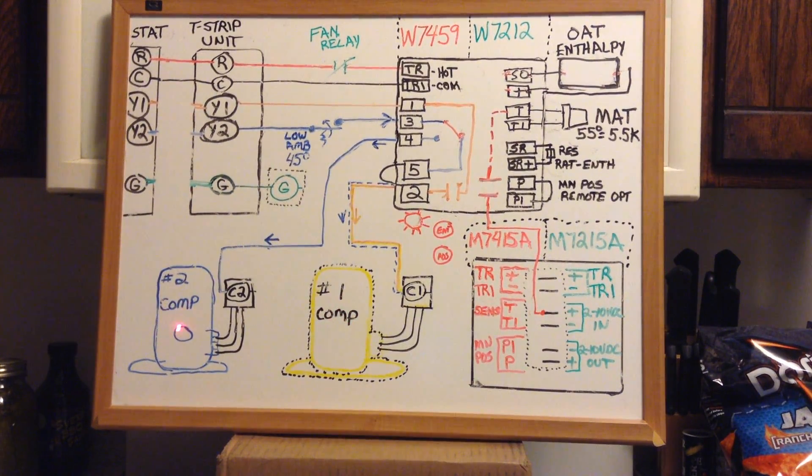And then we've got a number one compressor, number two compressor. This here is the contactor for the compressors. Outdoor air temperature enthalpy sensor, mixed air temperature sensor. The SR and SR plus terminals typically aren't used, but they always have a little jumper with a resistor in them. Those terminals are for the optional dual enthalpy if you wanted to use a return air enthalpy sensor along with the outdoor air, and then it looks at both of those enthalpies and determines which air is the better air for cooling. The P and P1 terminals on those logic modules always have a little jumper on them, no resistor, just a jumper. That is for the option of using a remote controlled minimum position. You could put a potentiometer in the store. Hardly ever see that on commercial equipment.